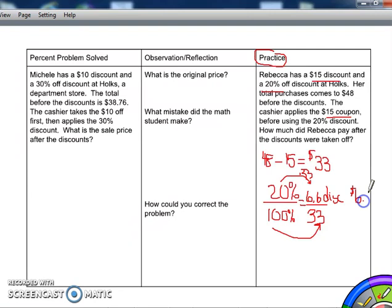Now what do I do with a discount? Well, for a discount, I always subtract. So I'm going to subtract that 20% discount from the new total, which is 33. So I do 33 minus the $6.60, and I get $26.40 as my final answer with all of the discounts taken.